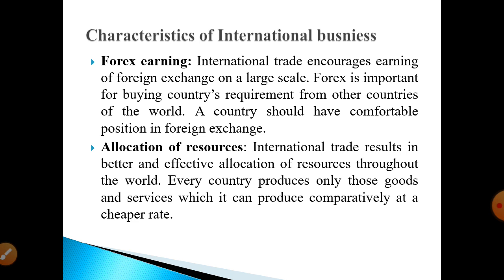Another characteristic is allocation of resources. Certain countries produce only those goods and services which they can produce at a cheaper rate. When goods and services are produced at a cheaper rate and sold to other countries, they are easily available in the market and customers can buy them, generating huge income. A best example of cheaper rate goods is China, which produces goods cheaply and sells them to the whole world.